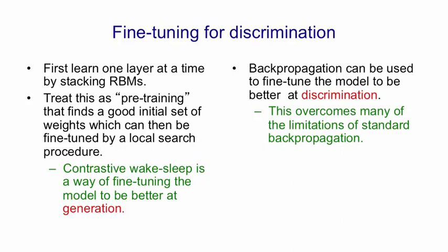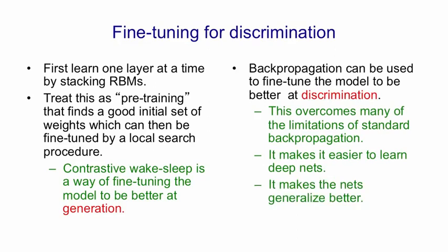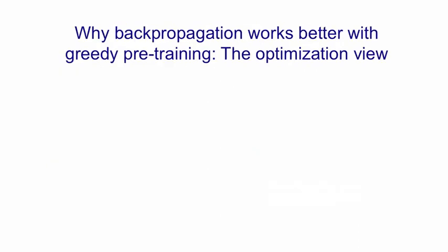If we do this it overcomes many of the standard limitations of back propagation. It makes it much easier to learn deep nets and it makes those nets generalize better. We need to understand why back propagation works better when we pre-train the weights. And there are really two effects: an effect on optimization and an effect on generalization.